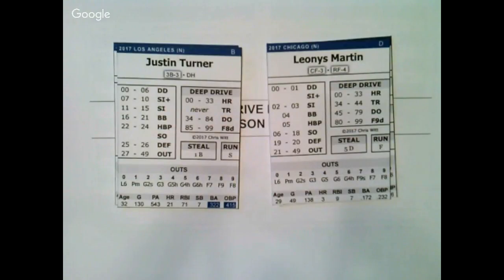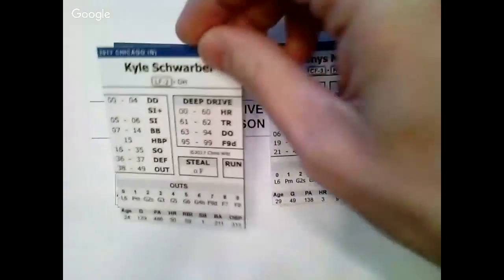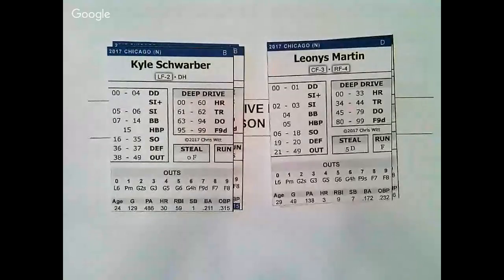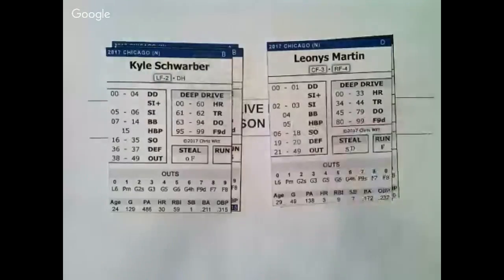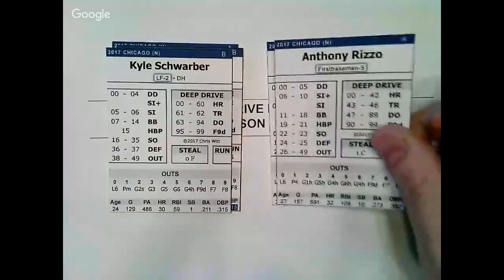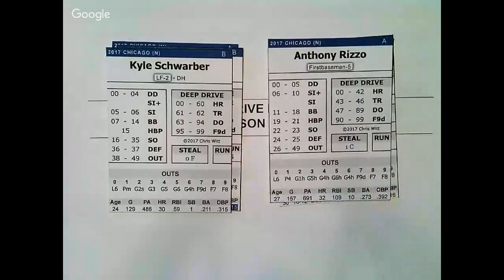Players in Deep Drive Baseball also receive individual fielding ratings that reflect their ability to get to balls in play, as well as how often they commit errors. For example, one card might result in a few extra hits and the occasional error while playing in left field, while another card will take hits away, turn more double plays, and almost never commit a fielding error.